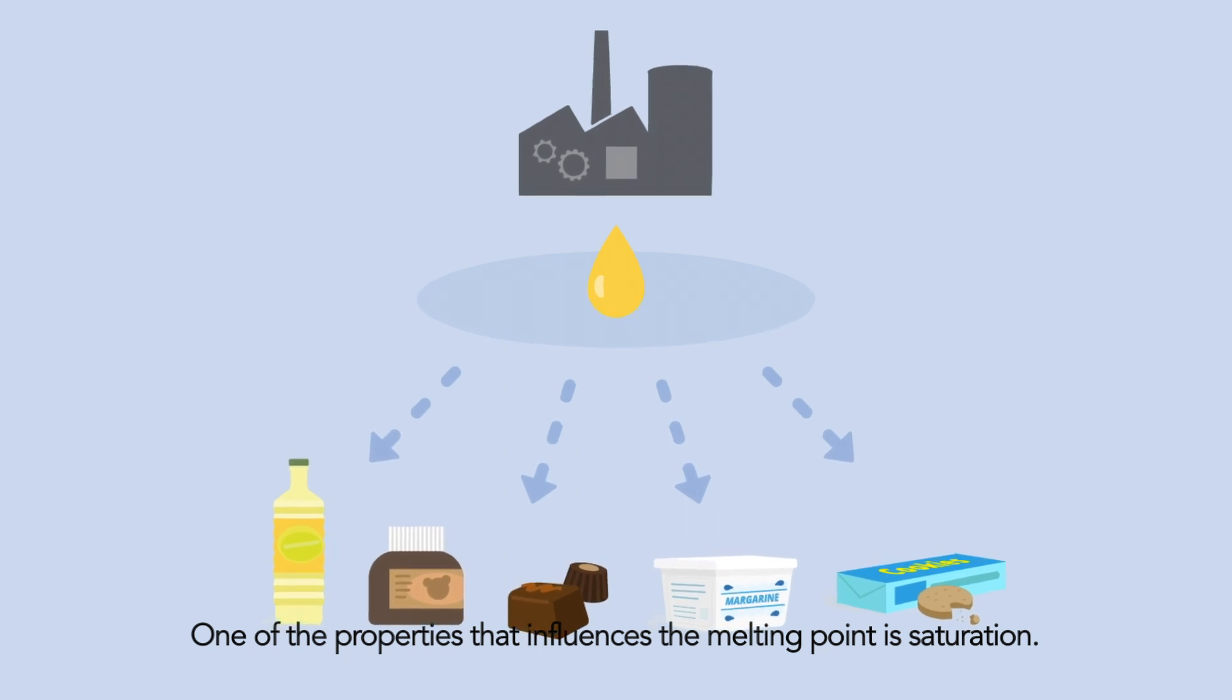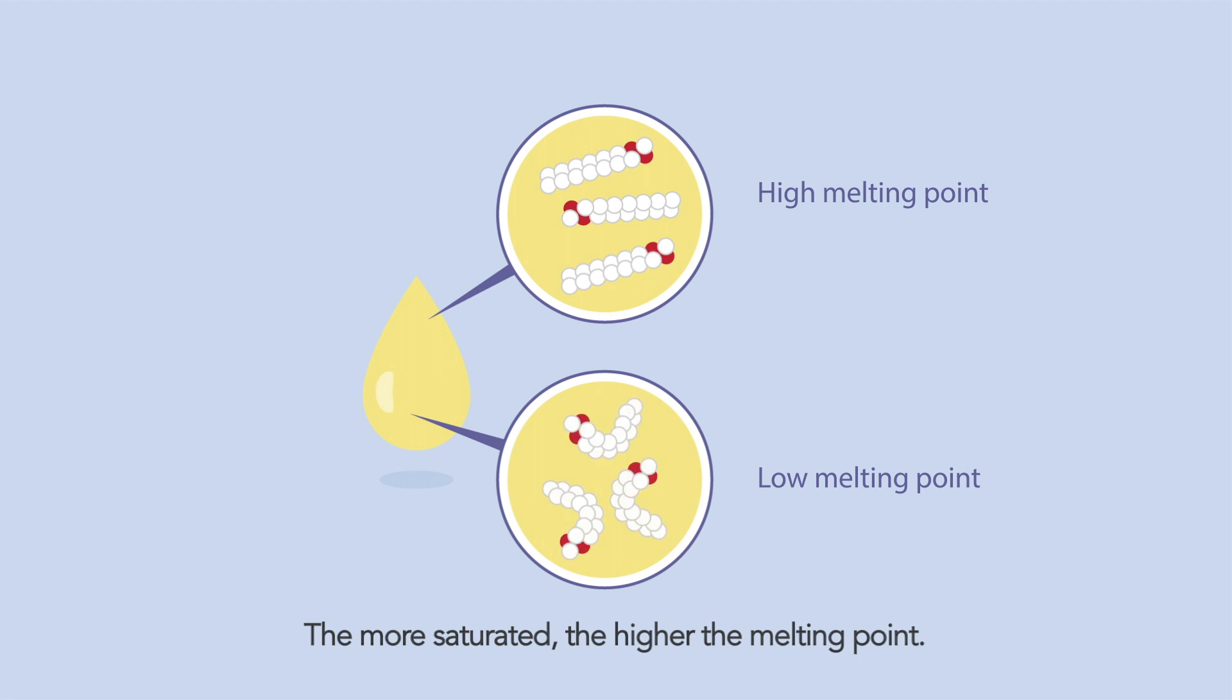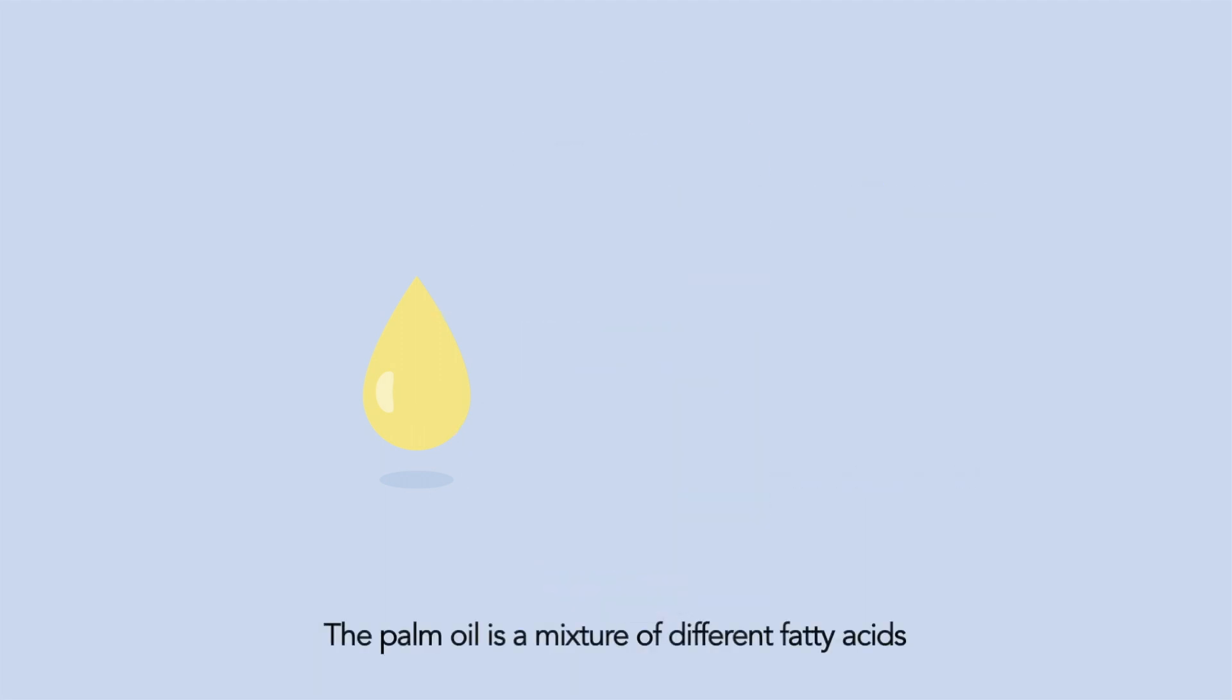One of the properties that influences the melting point is saturation. The more saturated, the higher the melting point. The palm oil is a mixture of different fatty acids with each a specific melting point.